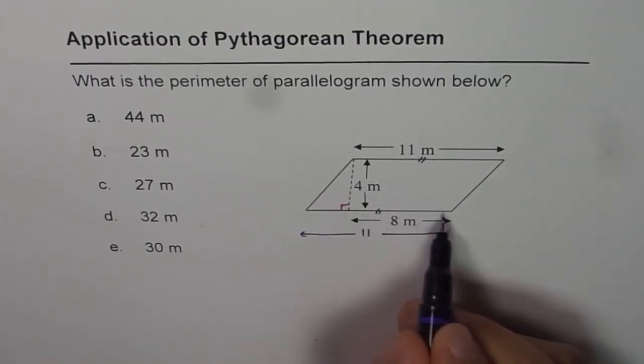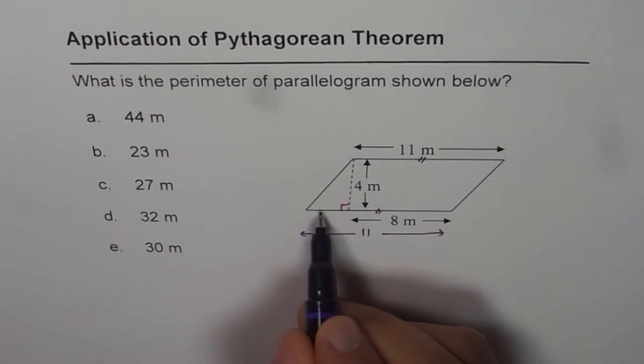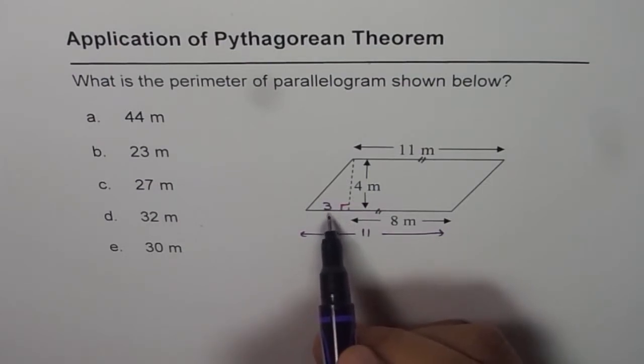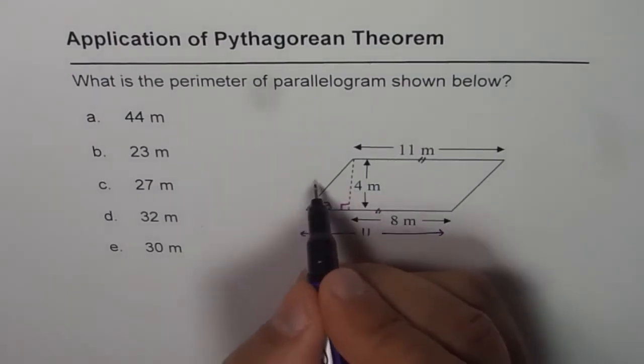We are given one part of this is 8. So the other part should be 11 minus 8, that is 3. Now we get a right triangle here which is 3, 4. The other side should be 5.